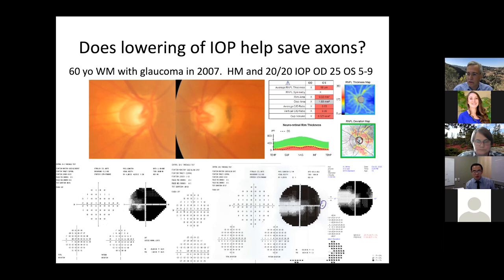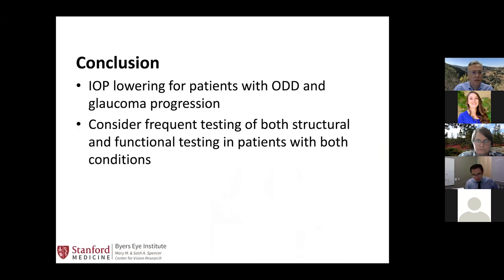His right eye has end-stage glaucoma with light perception vision. But the left eye, with pressures in the five-to-nine range, has basically stabilized — the temporal island has stopped getting worse. This illustrates to me that if we can lower intraocular pressure, you will have a protective effect on the axons in human patients.